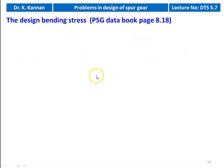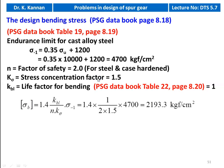Then we calculate the design bending stress — the equation is available on page number 8.18. The endurance limit for alloy steel: sigma_minus1 equals 0.35×sigma_u plus 1200, so 0.35 into 10,000 plus 1200 equals 4700 kilogram force per centimeter square. Factor of safety equals 2, stress concentration factor equals 1.5, and life factor for bending is 1 for life greater than 10^7. So sigma_b equals 1.4 × KBL divided by n × K_sigma × sigma_minus1: 1.4 × 1 divided by 2 × 1.5 × 4700 equals 2193.3 kilogram force per centimeter square.